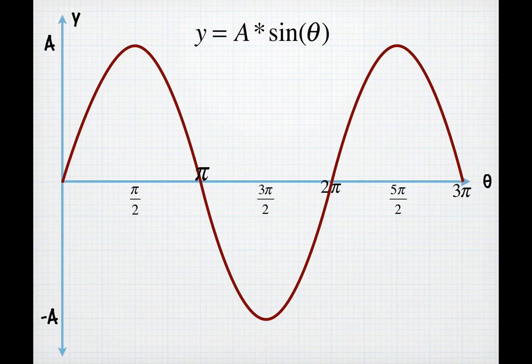When we plot out the y position as a function of angle, we'll see that it starts at zero, it increases to a maximum value of A and that occurs at pi over 2 radians. It comes back to zero at pi radians, goes to its negative maximum at 3 pi over 2 radians, and comes back to zero after 2 pi.